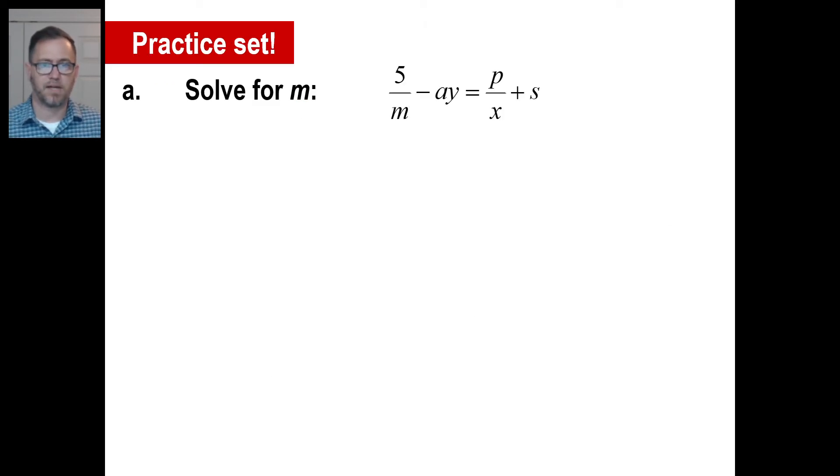All right. Let's take a look at A and B, and first I'll try A and pause it and come back in a second. All right. We're solving for m. I'm just going to go ahead and visualize my over ones, and then I'll put m times x as my common denominator. All right. Let's work on this one first. M's cancel. I get 5x. Done. Minus. Nothing cancels. MxAy. Okay. That equals. X's cancel, so I get mp. Done. Plus mxs. Okay.